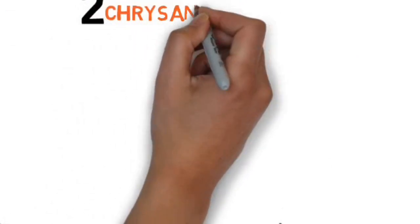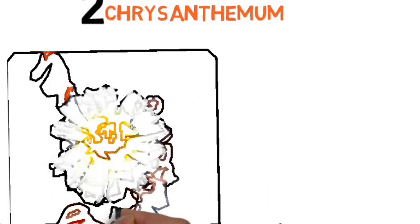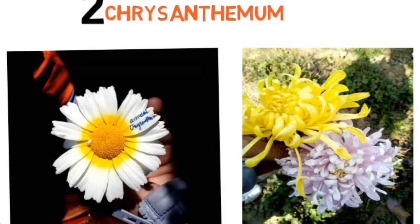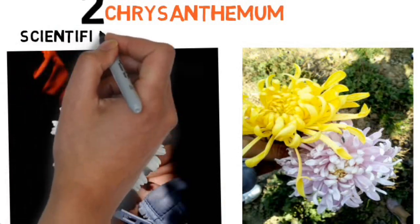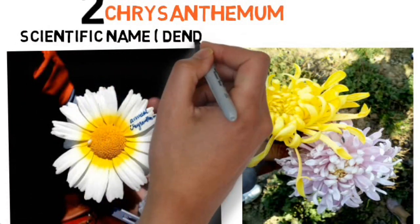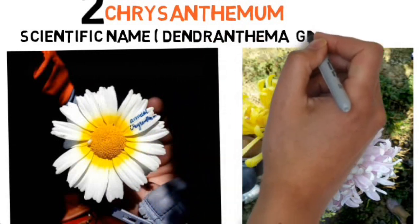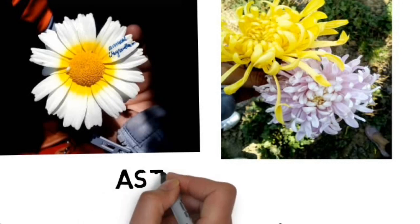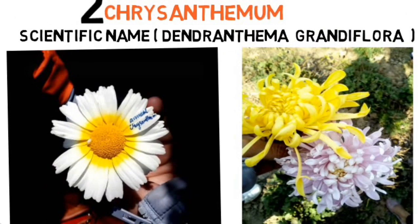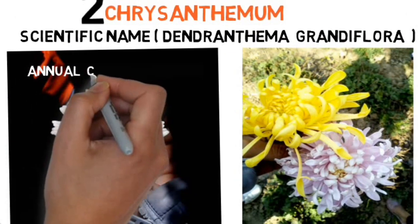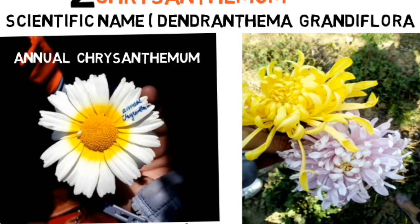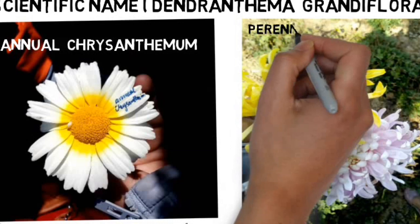Next is chrysanthemum. These are the flowers of chrysanthemum and its scientific name is Dendranthema grandiflora. It belongs to the family Asteraceae. This is the annual chrysanthemum and this is the perennial chrysanthemum.